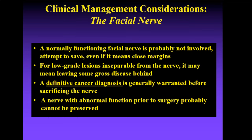Regarding the facial nerve: a normally functioning facial nerve is probably not involved by the tumor, and therefore we usually will attempt to save it, even if it means close margins. For low-grade lesions that are inseparable from the nerve, it may even mean leaving some gross disease behind in order to save the facial nerve. Generally, a definitive cancer diagnosis is warranted before sacrificing the nerve — this is why we want to make the most specific diagnosis possible on our salivary gland FNA. A nerve that shows abnormal function prior to surgery is probably involved by tumor and probably cannot be preserved.